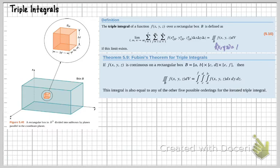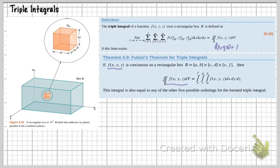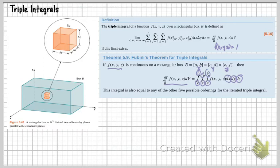Now look at the theorem below: Fubini's theorem for triple integrals. If f(x, y, z) is continuous on a rectangular box B, with x from a to b, y from c to d, and z from e to f, then the triple integral of f(x, y, z) dV over the region B equals the iterated integral dx dy dz of f(x, y, z), where the bounds for dx are a and b, for dy are c and d, and for dz are e and f. This integral is also equal to any of the other five possible orderings for the iterated triple integrals.